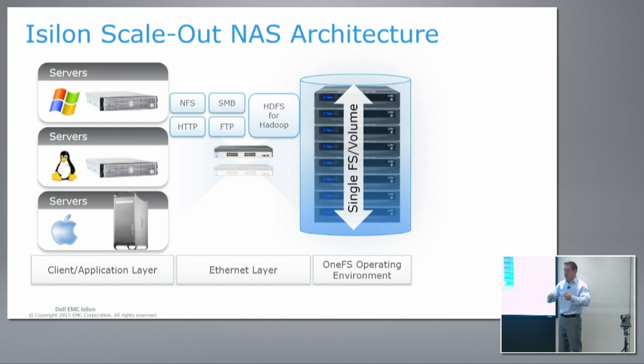Adding an Isilon node into a cluster is basically: cable it up, put it into the backplane — which is an InfiniBand backplane today, with other modalities coming in the future — turn it on, press a button on the front, and it adds capacity and performance and joins the cluster. It's a very quick operation. I can do it, so it must not be that bad.